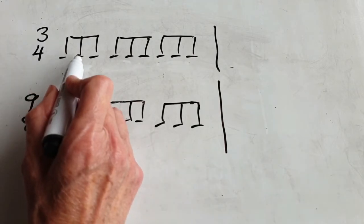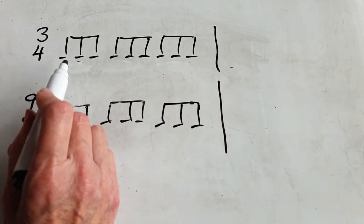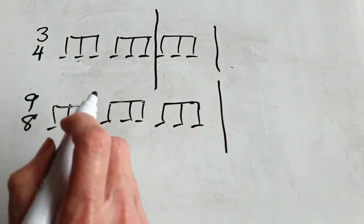You'd have one, two, three, four and a half beats in the bar, so the bar line would have to go there.